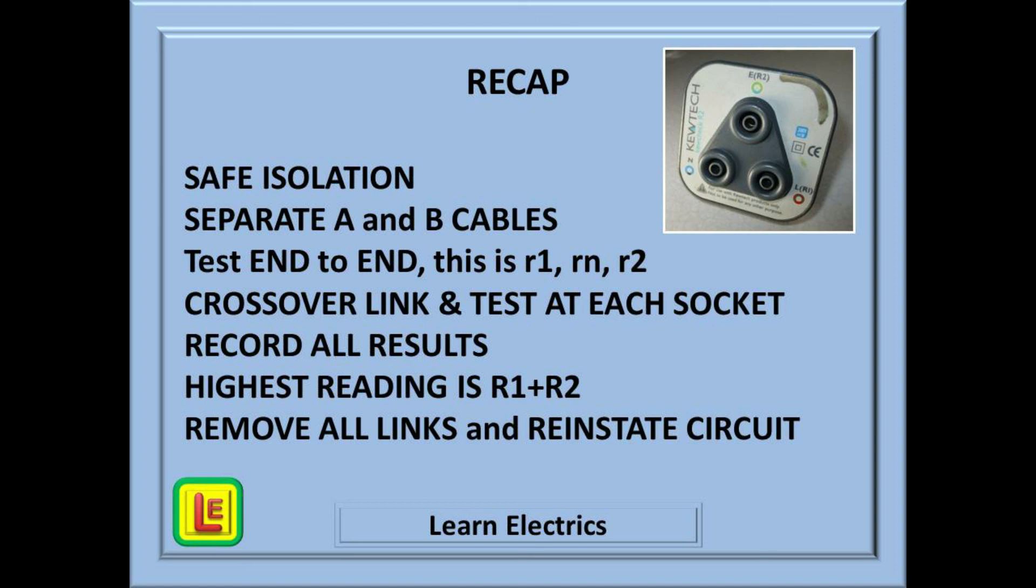A quick recap then. Make sure you are working safely and remember safe isolation. Separate the cables A and B. Test end-to-end on each pair to get little r1, little rn, and little r2. Make the crossover link and test at each socket. Record all the results, and the highest reading is your big R1 R2 value. Don't forget to remove all the links and reinstate the circuit. Job done.